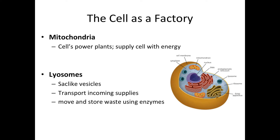Two other vital components of our cellular miniature factory are mitochondria — we all know mitochondria are technically the power source of the cell and supply it with energy. And then also lysosomes. Lysosomes are sac-like vesicles that transport incoming supplies and help move out waste. They use enzymes to be able to get rid of waste and throw it outside of the cell.